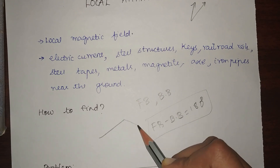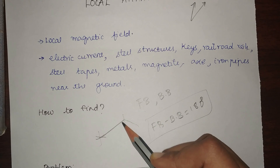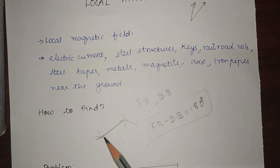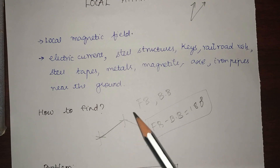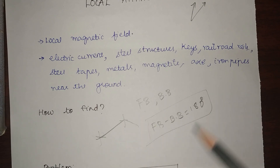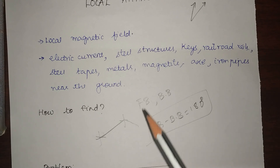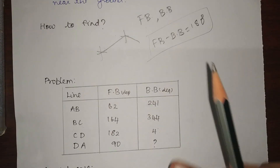Whenever we take readings of any two lines, we take both the fore bearing and back bearing. We then check that fore bearing minus back bearing equals 180 degrees. If it is not equal to 180 degrees, then local attraction has been present at that station. Let us jump into a quick example to understand this clearly.